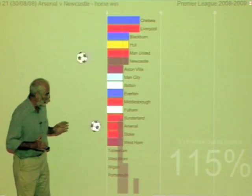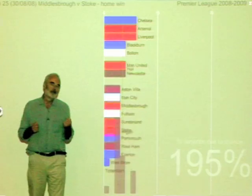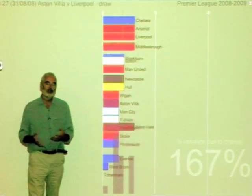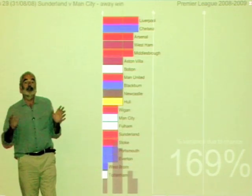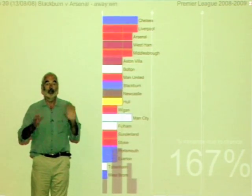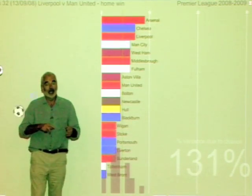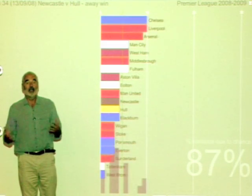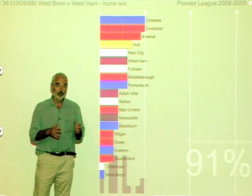We can do a bit of maths to work out what sort of spread of points we'd expect if the games were just luck. It turns out that around about half of all games are home wins, about a quarter are away wins, and about a quarter are draws. So if at the beginning of every game they flipped a coin — heads the home team won, tails they flip again, heads the away team won, otherwise a draw — that would produce half home wins, a quarter draws, and a quarter away wins.